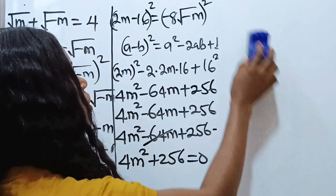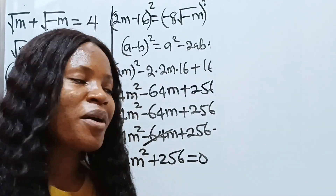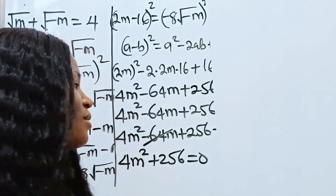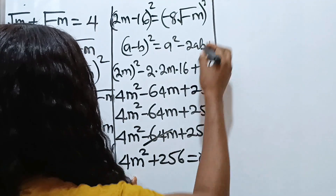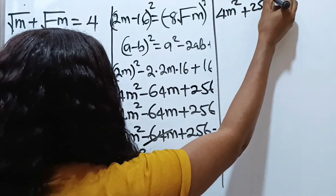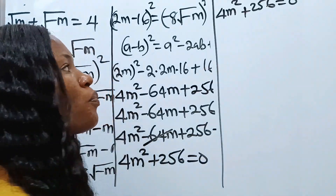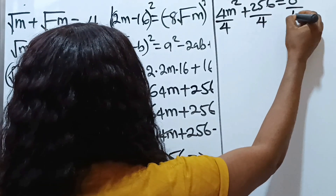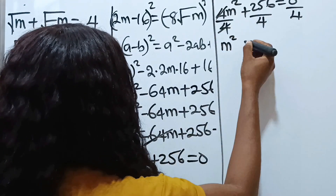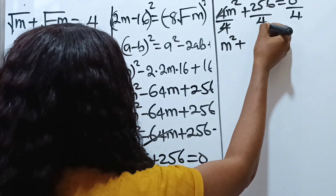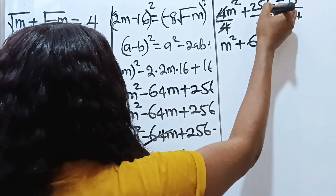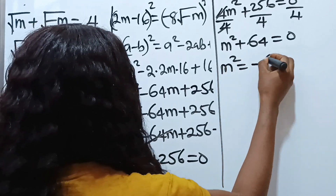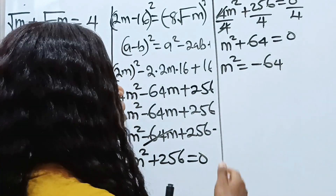We have 4m squared plus 256 equals zero. Let's divide through by 4: divided by 4, divided by 4, divided by 4. We get m squared plus 64 equals zero. So m squared equals negative 64.